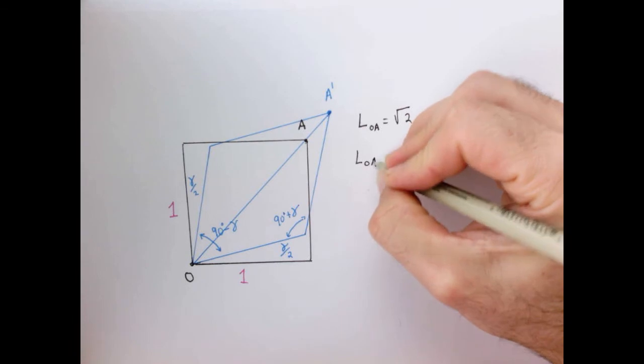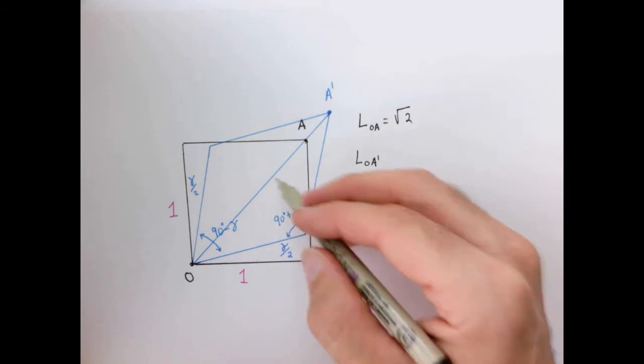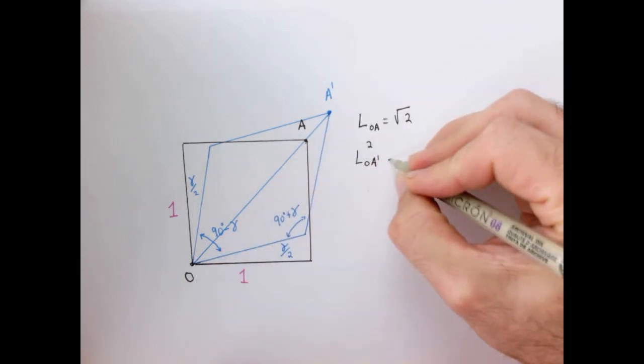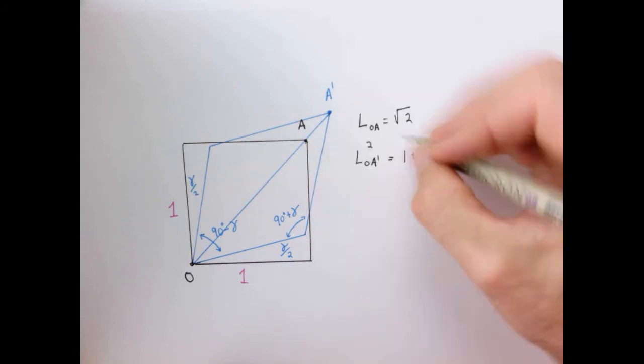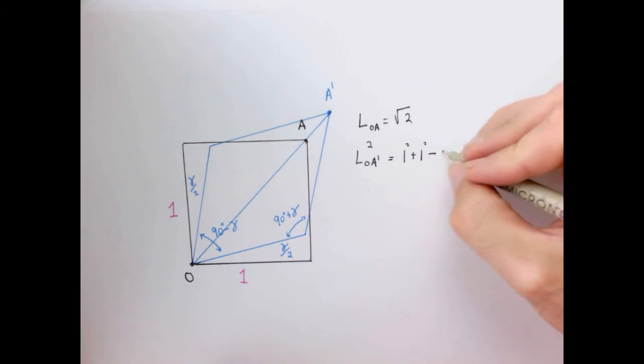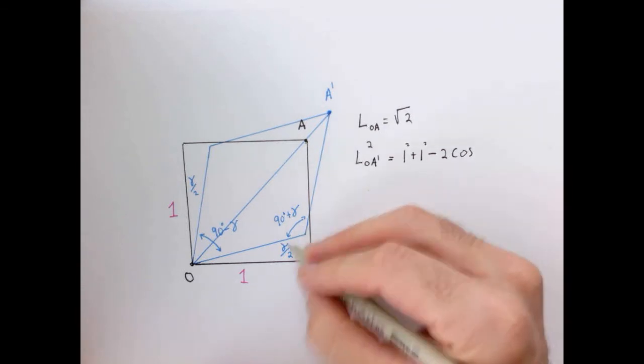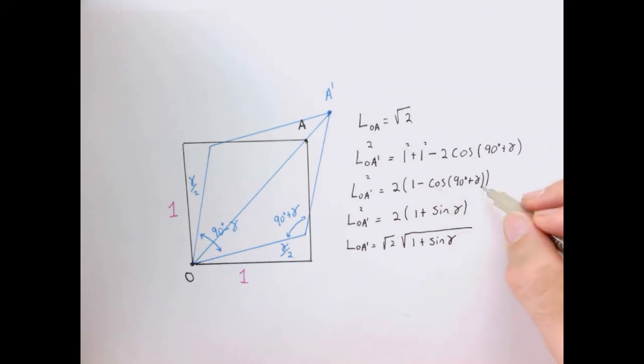To get the length of line O to A prime, we have to use a bit of trigonometry. Probably the easiest thing to do is to use the law of cosines. We can apply it to any triangle, so we'll apply it to this triangle. The law of cosines says that the length here squared is equal to this length squared, so that's just one, plus this length squared, so that's just one, minus twice this length, which is just one, times this length, which is just one, times the cosine of this angle right here, 90 degrees plus that shear angle. We can do a bit of manipulation here where we use trigonometric relationships to convert the cosine of 90 plus the shear to just the sine.